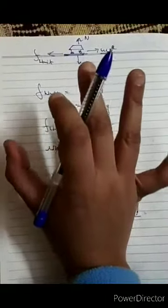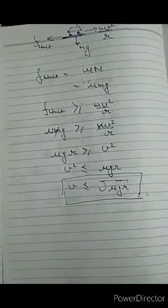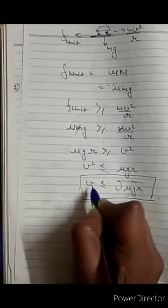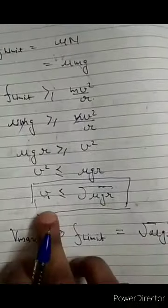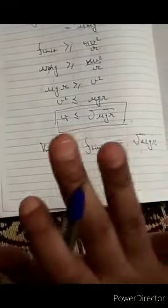Now let's discuss different cases. Limiting friction acts when friction is at its maximum value; after that, kinetic friction comes into play. So when you are talking about maximum friction, it means this velocity is the maximum velocity you can take. For limiting friction to act, the maximum velocity expression is v = √(μgr). If your velocity is less than this, you are on a safe turn.